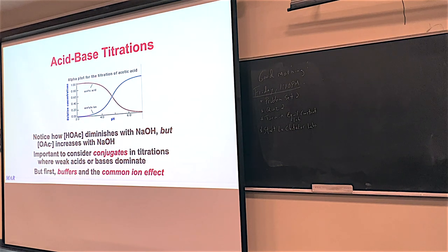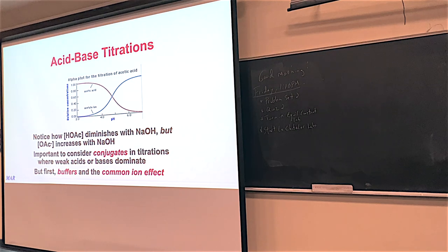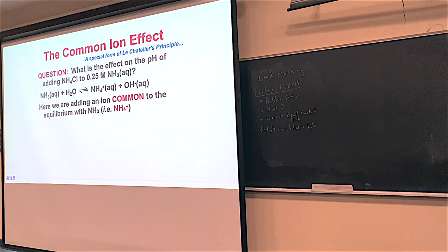A buffer is just a weak acid with its conjugate base, or a weak base with its conjugate acid. Because they're weak, they can coexist with each other. Strong acids and strong bases together are like cats and dogs in a bag — they push completely to the product side. But weak acids and weak bases are more chill — they can hang out and coexist. The common ion effect is basically just Le Chatelier's principle rebranded, in my opinion. But it is considered its own topic, so let's talk about it.